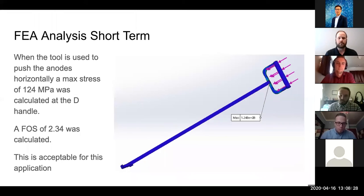In preparation for manufacturing, we decided to conduct some FEA analyses to better understand what we should be looking for. In design of the hand tool, there are two forces or operations of motions that are applied: a pushing motion and a prying motion. For our pushing motion, we found a max stress of 124 megapascals, located right at the base of the D handle. At this stress, we calculated a factor of safety of 2.34.